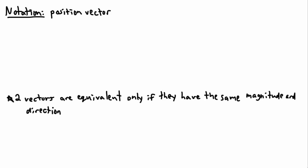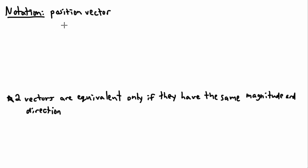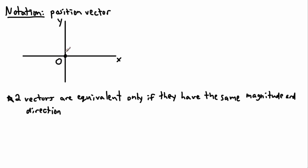With vectors, notation is really important. We have something called a position vector, and this is going to be defined based on XY Cartesian coordinates. I'm going to draw a set of XY axes here. This right here represents my x-axis, this is my y-axis. This zero point right here is often called the origin, sometimes written as O for origin, or position zero-zero.